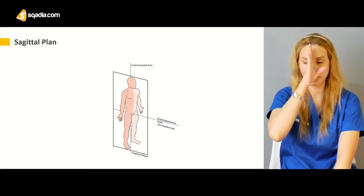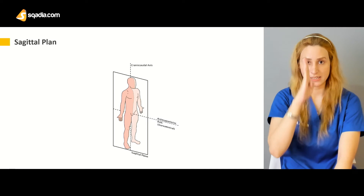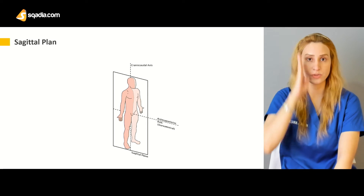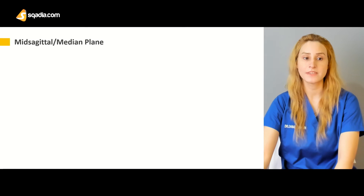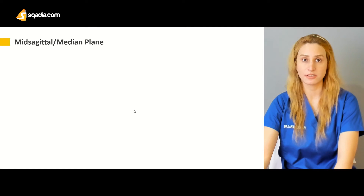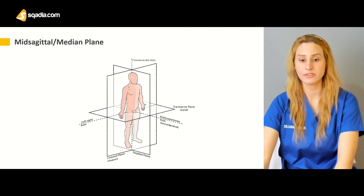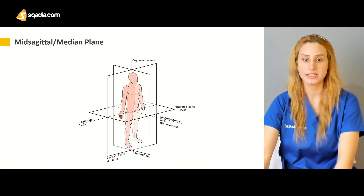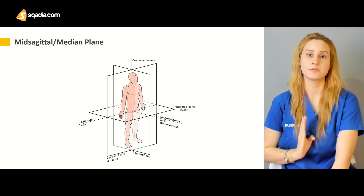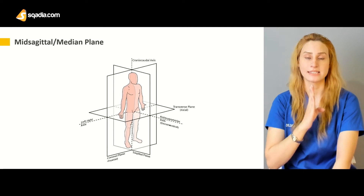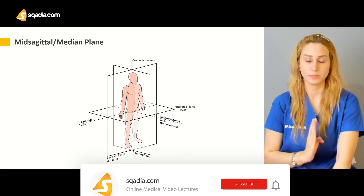So the sagittal plane — you have to cut the body like this in the vertical position. Then you have the mid-sagittal or median plane, already explained. If you're cutting the body in the anterior-posterior direction but close to the midline, that would be called the mid-sagittal plane.